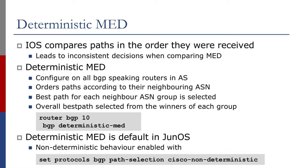Cisco IOS stores these paths in the order they were received — oldest first to newest last. When doing best path selection it compares the first two, the winner is then compared to the next one, and so on through the list. Every time you cycle a link such that your best path no longer becomes the best path, the best path selection ends up with a different result each time. This is not a bug in the software, just the fact that the BGP specification didn't specify how paths should be ordered.